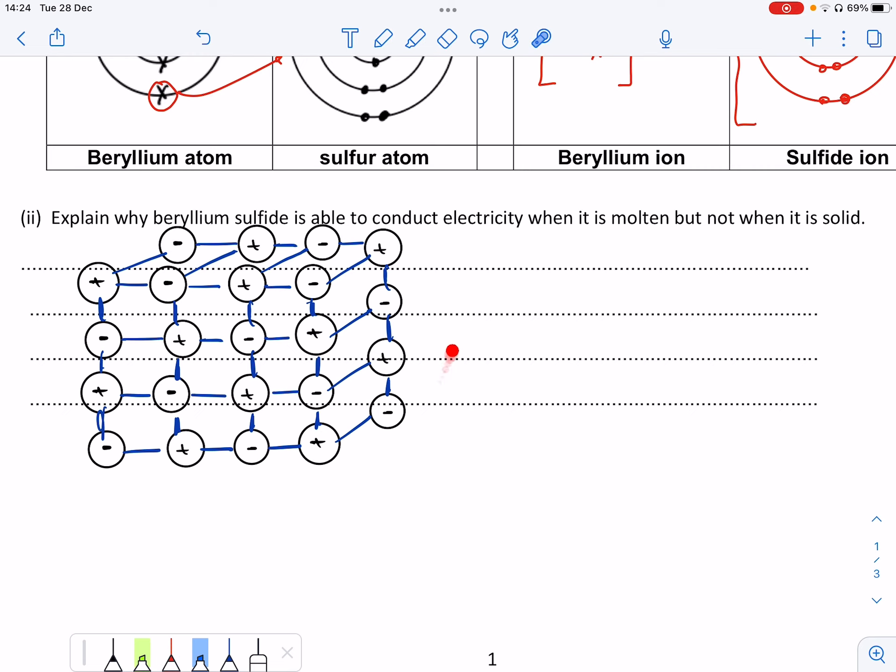you can see here is my ionic compound. I've got my positive ions, negative ions, positive ions, negative ions to form my lattice. This is an ionic lattice. When it's a solid as it is here, the electrostatic attractions